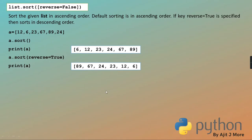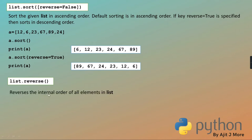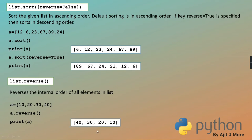Next we have the reverse() method. If you want to change the internal order of your list — making the first element last, second element second-last, and so on — you use reverse(). It changes the internal order of elements in the original list. Like sort(), it does not return a copy. a.reverse() reverses the original list in-place.